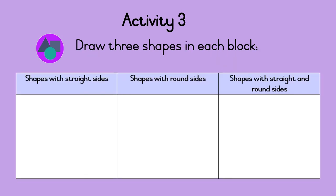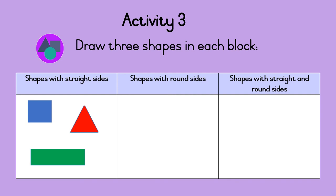Activity 3: Draw three shapes in each block. The first block is for shapes with straight sides. The second block is for shapes with round sides. And the last block is for shapes with straight and round sides. So you could draw a square, a triangle, or a rectangle in the first block because these shapes have straight sides. You could draw a big circle, a small circle, or an oval in the second block because these shapes have round sides.